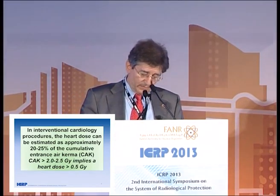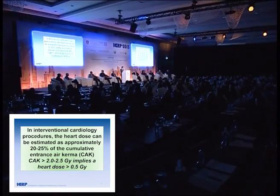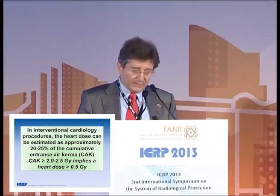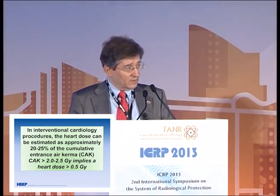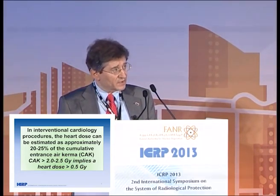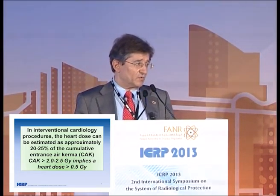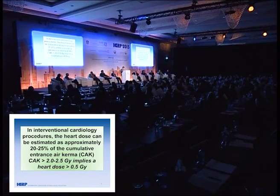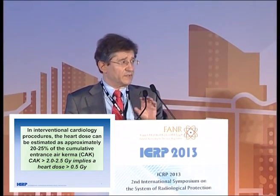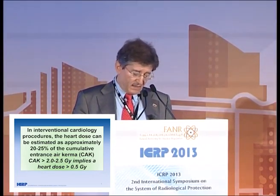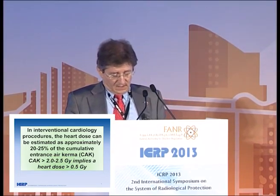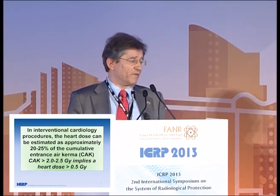Concerning interventional cardiology procedures, the beam moves a lot during the procedure as we try to visualize the coronary arteries, but always there is some dose to the heart. Using Monte Carlo calculations, the dose to the heart is approximately 20 to 25% — it could be 15% if we are using collimation — of the total cumulative entrance air kerma. If the cumulative kerma is higher than 2 or 2.5 grays, this involves a heart dose that could be higher than 0.5 grays.